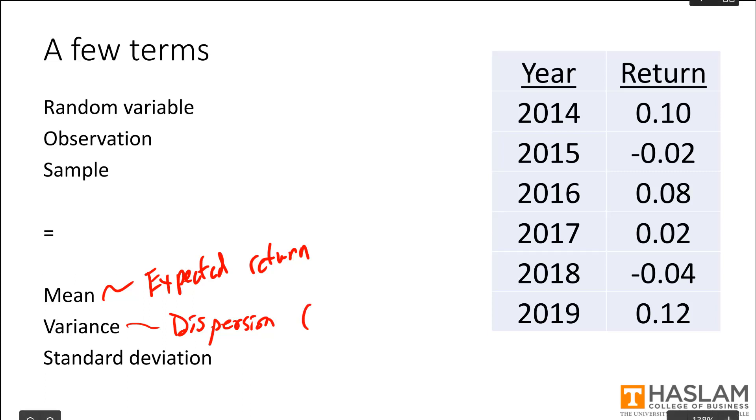A variance is measured in squared units. And its standardized counterpart, the standard deviation, is measured in units. So the standard deviation is just the square root of the variance.